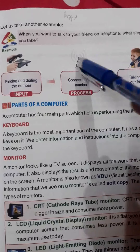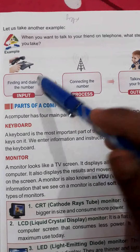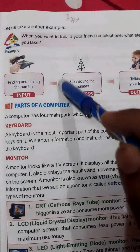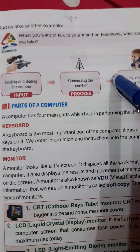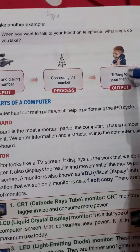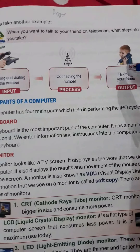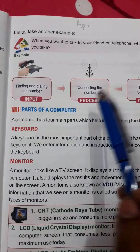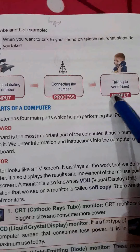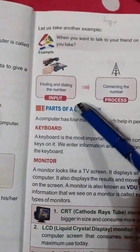After dialing, the network towers support the connection — connecting the number is the processing step. After the connection is made, you talk to your friend — that is the output. So: finding and dialing the number is input, connecting the number is processing, and talking to your friend is output.